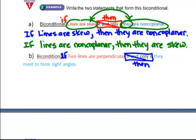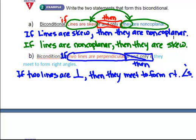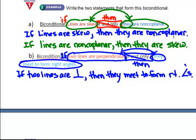Now I'm ready to write my two statements. If two lines are, I'm going to abbreviate perpendicular with the symbol, comma, then they meet to form right angles. Now we're going to flip flop the hypothesis and the conclusion. This is my hypothesis. This is my conclusion. We're going to flip flop them.